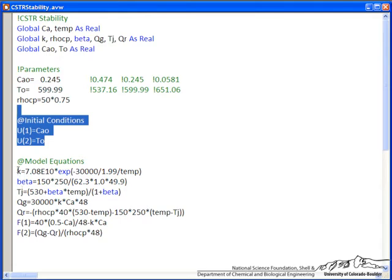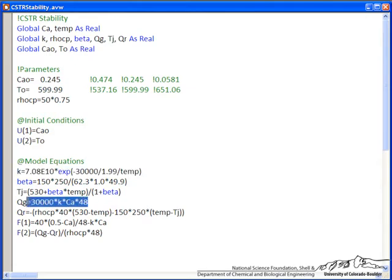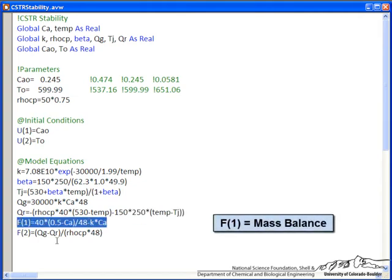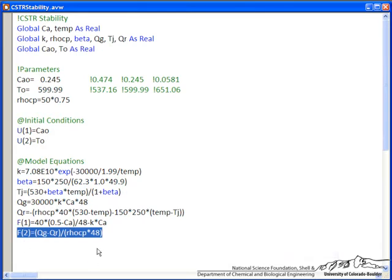So we have a rate constant, and let me first just point out we've written in terms of expression for heat generated, heat of reaction, rate of reaction, volume, and expression for heat removal, where we have to heat up the feed coming in, and we also have heat exchange with some external temperature, Tj. The first equation then is the mass balance, and the second equation is the energy balance written in terms of QG and QR.